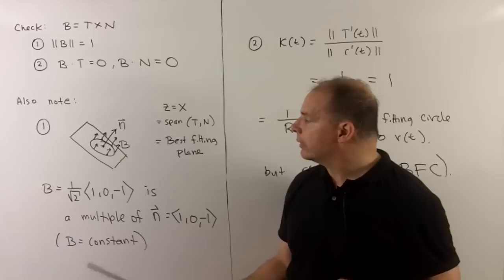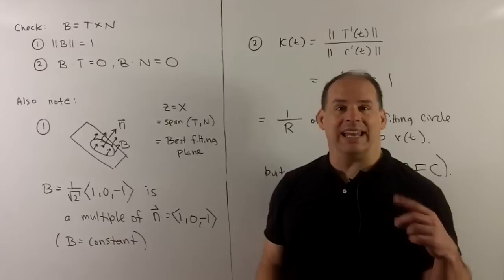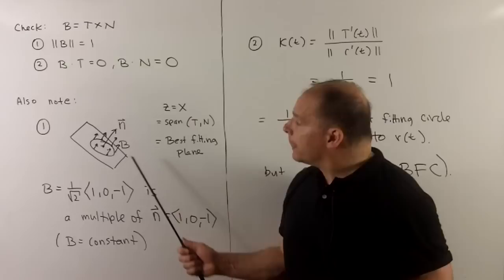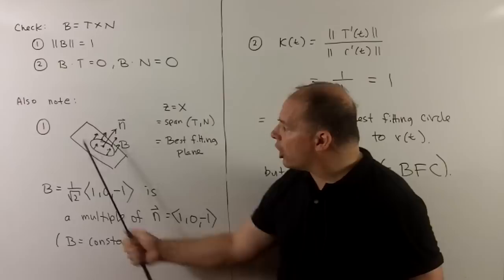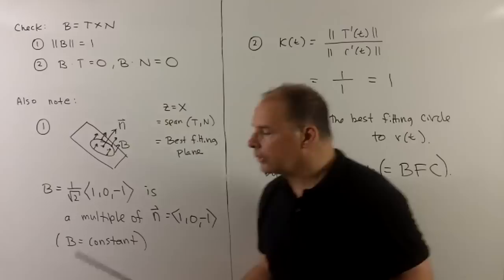For some geometric interpretation, let's first note we've seen the binormal is always a multiple of the normal vector for our plane. So this circle lives in the plane. So if we take the best fitting plane, that's a span of T and N, that's just going to be the plane itself. So if we're perpendicular to the best fitting plane for a curve, in other words, if we're pointing away from the circle or out from the circle, we have to be pointing out from the plane.